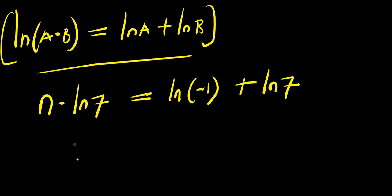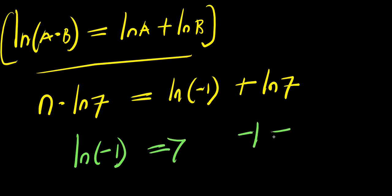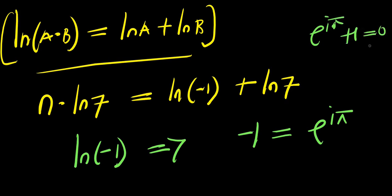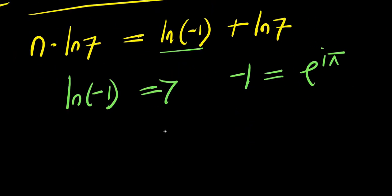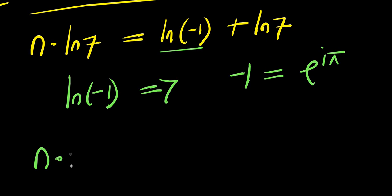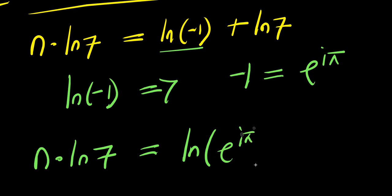So right now, natural log of negative 1 — I can express negative 1 as e to the power of i times pi, because e to the power of i times pi plus 1 equals 0, which means negative 1 equals e to the power of i times pi. So we replace this negative 1 with e to the power of i times pi, giving n times natural log of 7 equals natural log of e to the power of i times pi, plus natural log of 7.